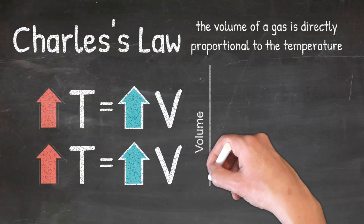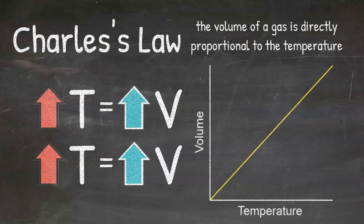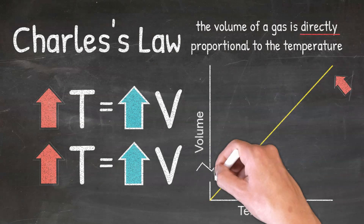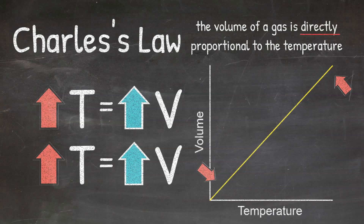We can represent Charles' law using a graph where we would graph the temperature and the volume. As you can see here, this graph has a positive slope, which helps to show the direct relationship between temperature and volume. When the temperature is high, the volume is also high. And when the temperature is low, the volume is also low. Again, showing the direct relationship of temperature and volume of a gas at constant pressure. As one goes up, the other goes up, and as one goes down, the other goes down.